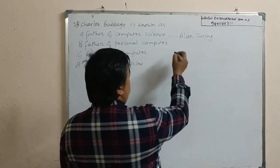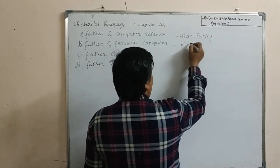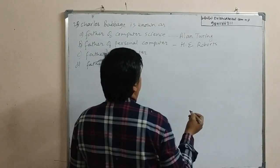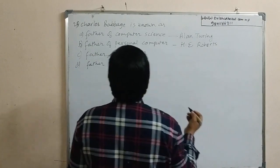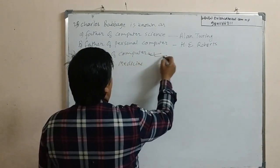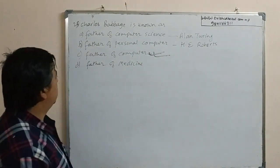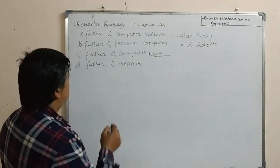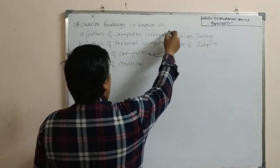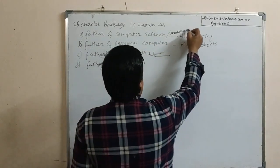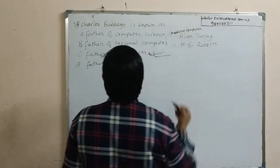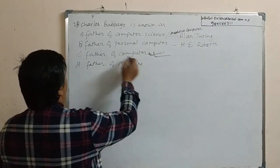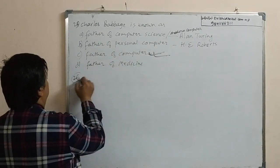The father of computer science is Charles Babbage, so option C is the correct answer. The father of computer is Charles Babbage. Alan Turing is known as father of computer science or modern computer. Father of personal computer is Henry Edward Roberts, and father of computer is Charles Babbage. So option C is the correct answer for this question.